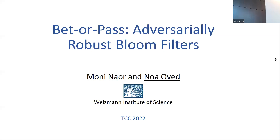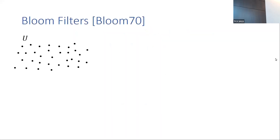This session is on anonymity, verifiability, and robustness. The first talk is 'Better Pass: Adversarially Robust Bloom Filters,' presented by Noah. In this work, we explore what it means to be a robust bloom filter — meaning a bloom filter that performs well even when facing an adaptive adversary. We suggest a few notions and highlight one in particular, the Better Pass, as capturing the desired property of such a data structure.